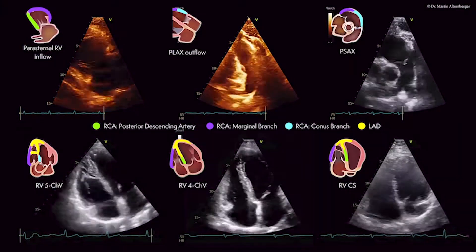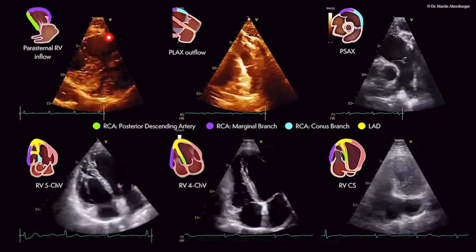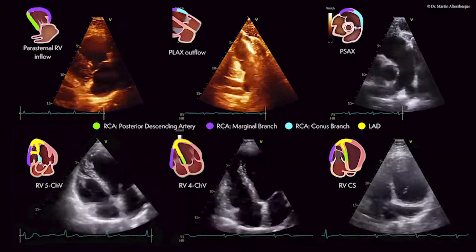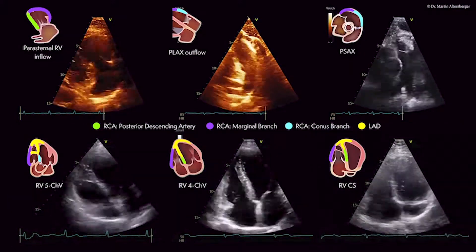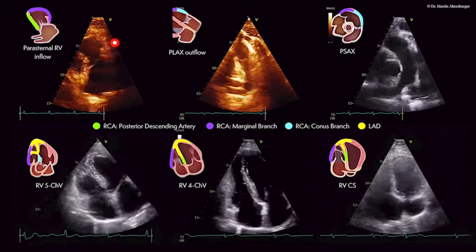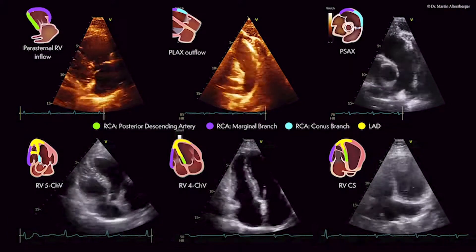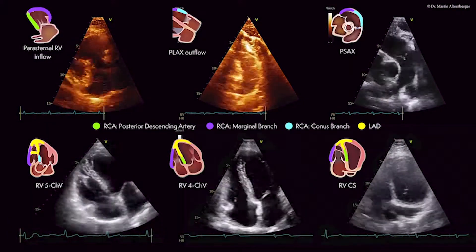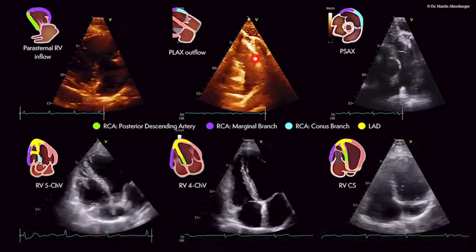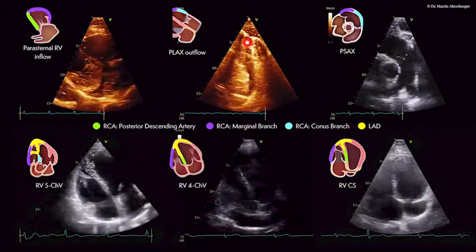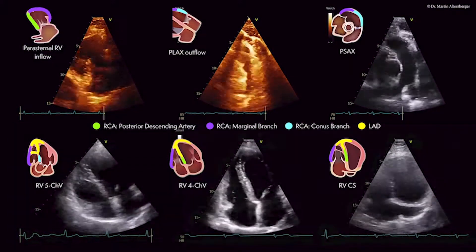In the parasternal right ventricular inflow view, we have here the anterior and the posterior wall. The right coronary artery marginal branch is responsible for supplying the anterior wall seen here. The right coronary artery posterior descending artery is responsible for the posterior wall. In case of the infundibulum or the RVOT seen here, we have the RCA conus branch, and we can also see this in the parasternal short axis view.